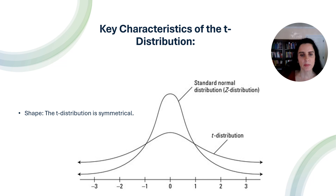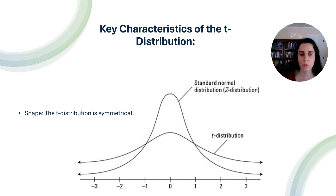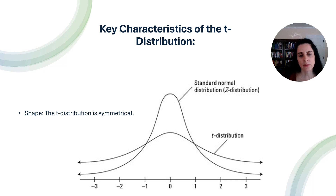A visual comparison of the T-distribution in relation to the normal distribution shows that both distributions are symmetrical around the mean, which is usually zero. However, the T-distribution has more weight in its tails compared to the normal distribution. When sample sizes are smaller, the tails of the T-distribution are heavier. As the sample size increases, the T-distribution's tails become thinner and the distribution itself becomes closer to the normal distribution. The T-distribution assigns a higher probability to extreme values — those that fall far from the mean — especially with smaller sample sizes.